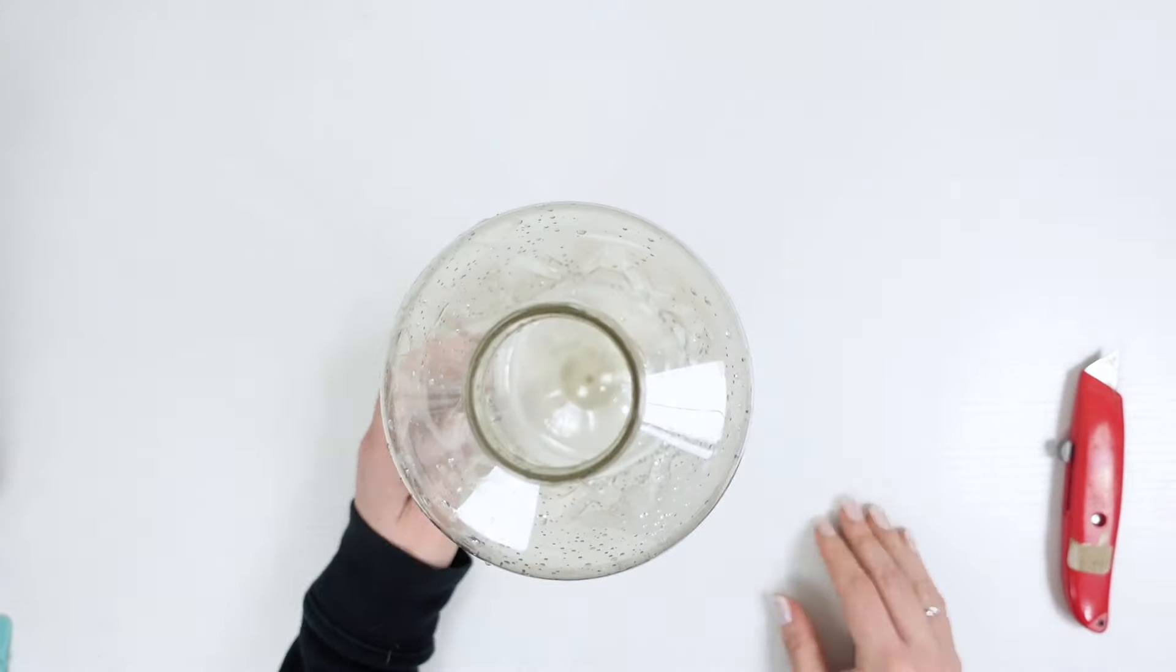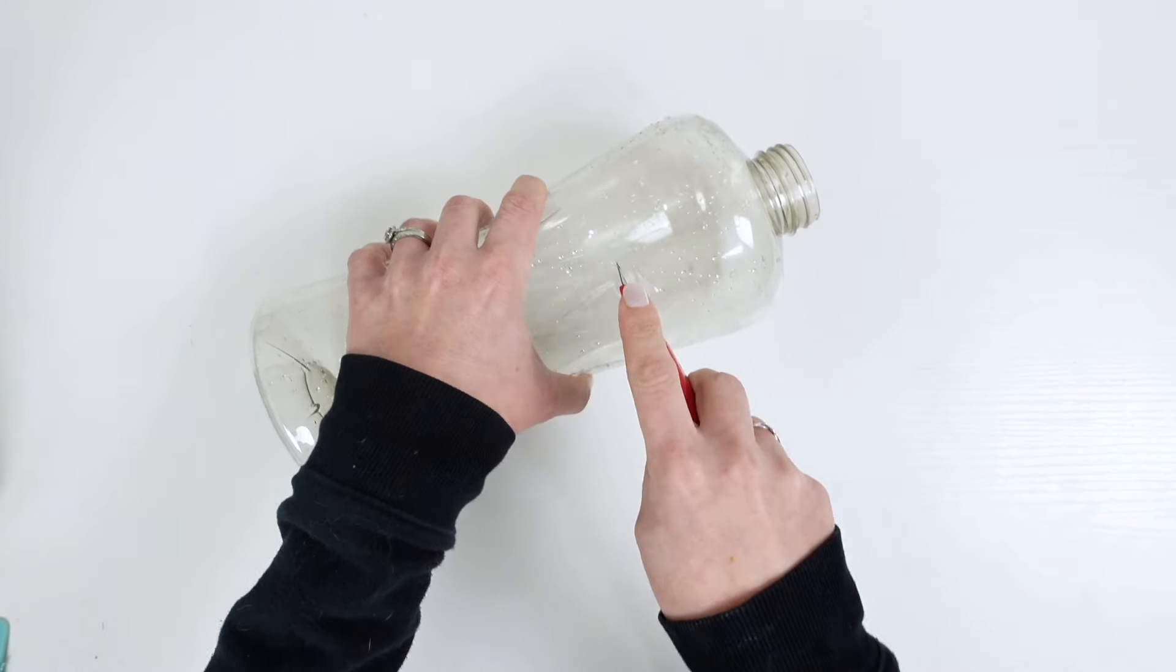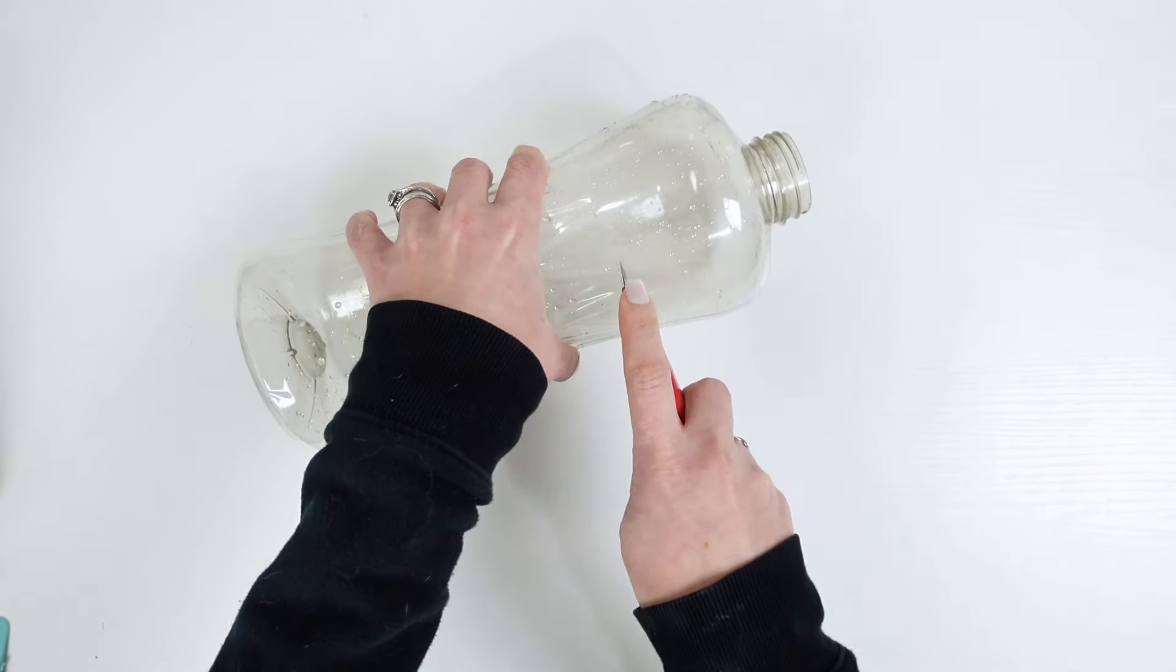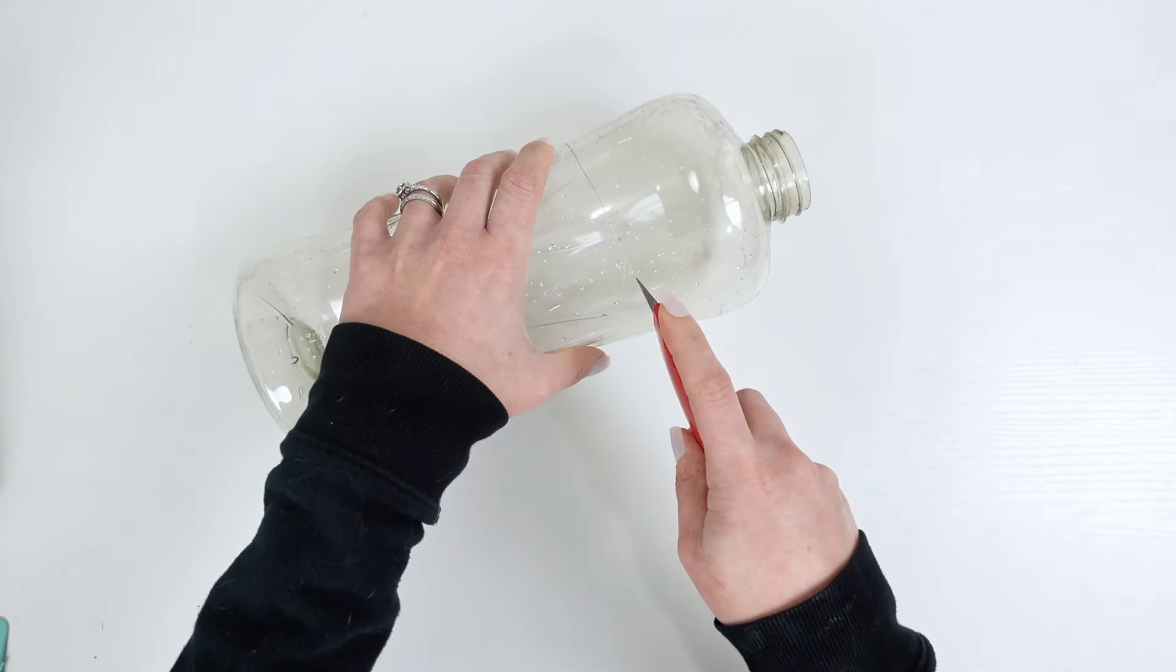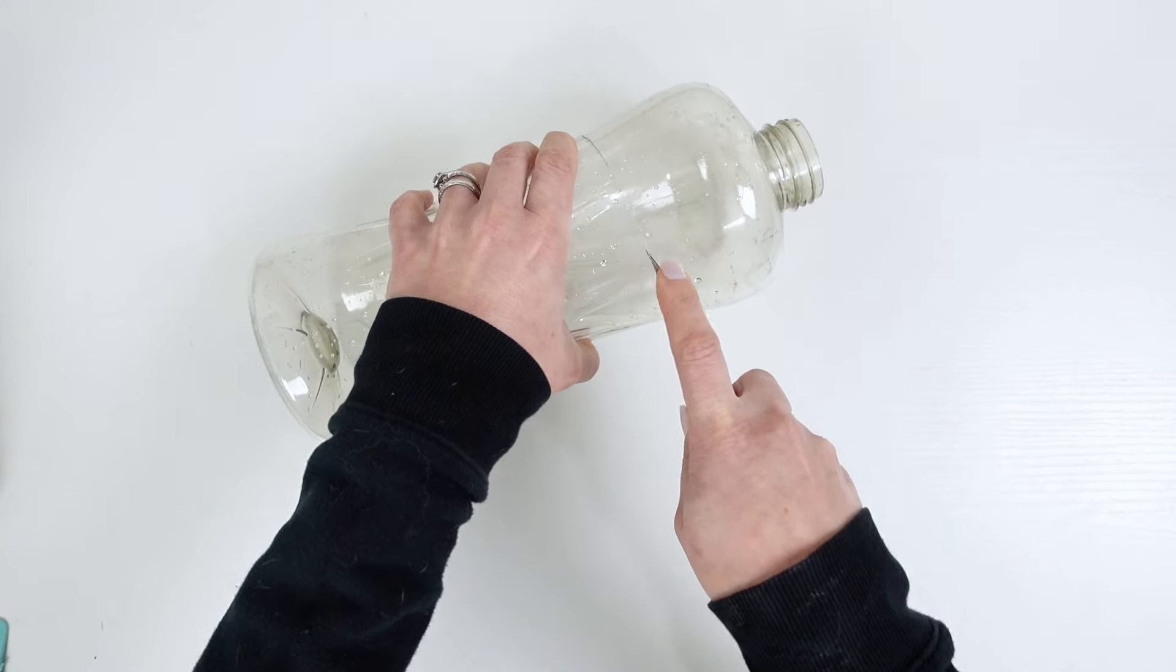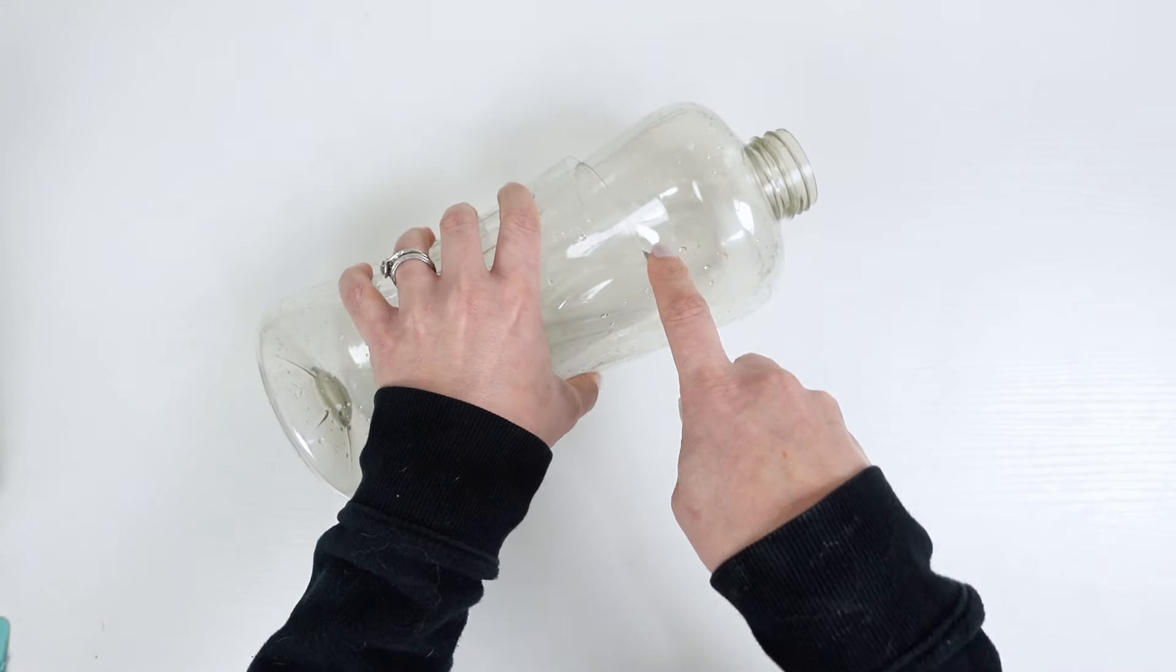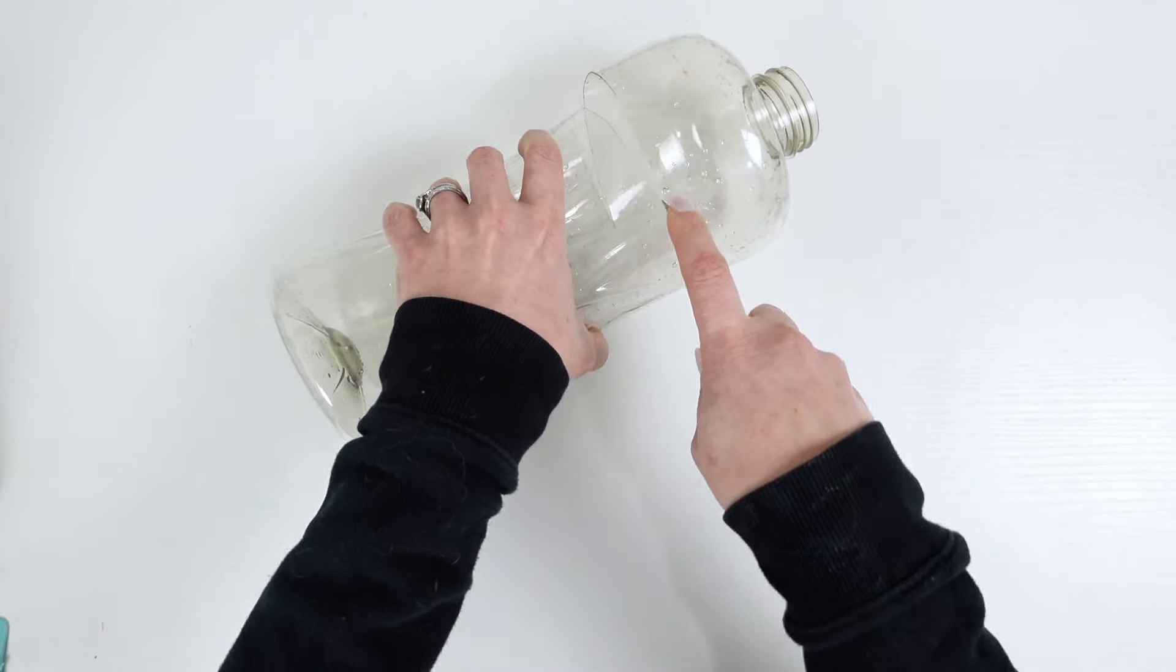From there I started cutting, and what I should have done was marked it with a permanent marker first or some sort of line, even like a light cut. But I just went for it and started cutting along the top of the ridges here. I did rinse out the bottle, but you can also just rinse it out once you cut. Just please, please, please be careful while you're doing this so you do not cut your fingers.